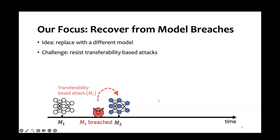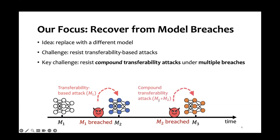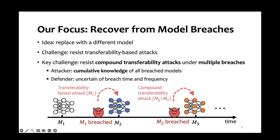However, model breach can happen more than once. When M2 is also breached, we need to replace it with M3. But in this case, the attacker has access to both M1 and M2 and can launch a stronger type of attack against M3. We call this compound transferability attacks. As this goes on, the attacker gets stronger with more models breached. But the defender, besides the uncertainty on when and how often model breach happened, has to replace the breached model immediately after model breach. This is the problem of robust model versioning.